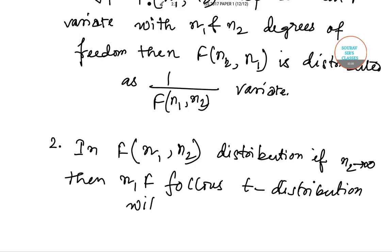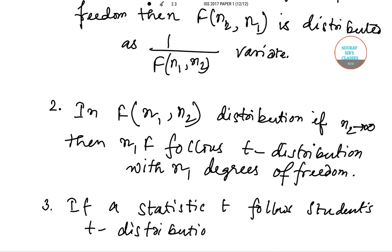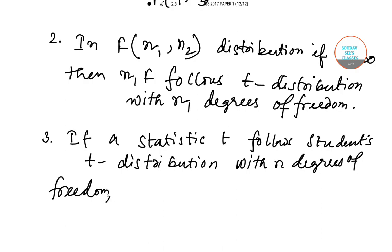And the third consideration is: if a statistic t follows Student's t-distribution with n degrees of freedom, then t² follows F distribution with 1 and n degrees of freedom.